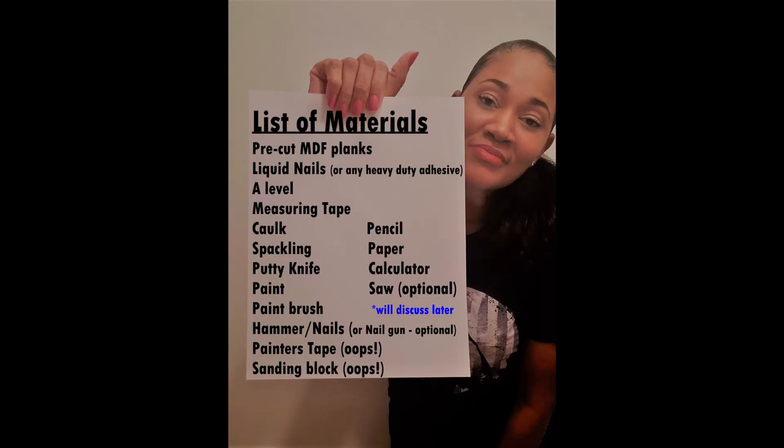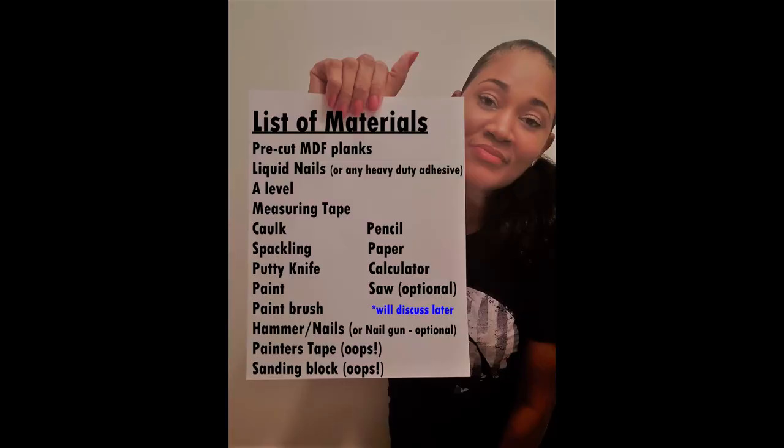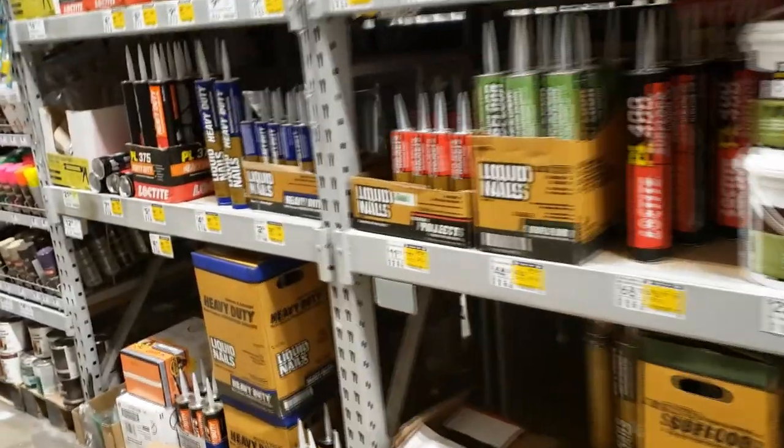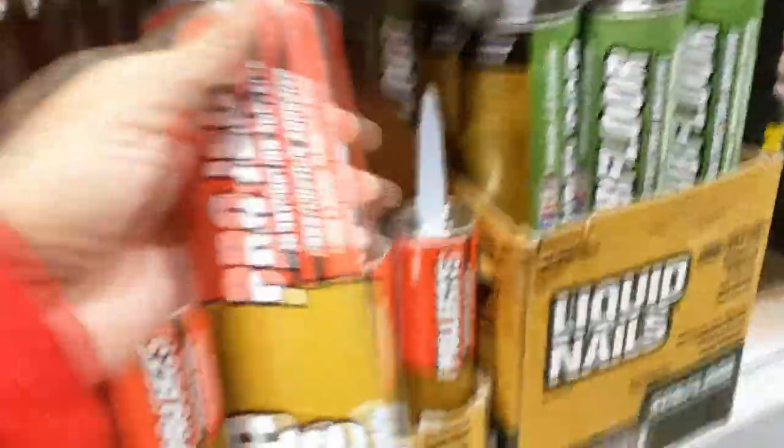All right, so let's start off with the list of materials. First we got the pre-cut MDF planks. You can find that in the pre-cut plywood aisle in your local home improvement store. That's where I found mine. Liquid nails. I found that with the adhesives. It was in the same aisle as the spray paint.